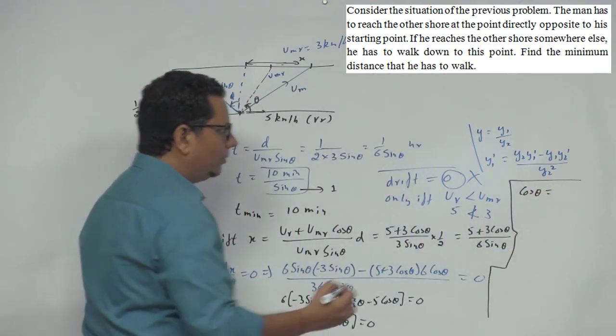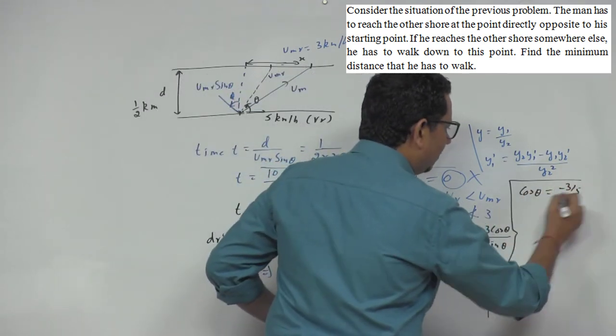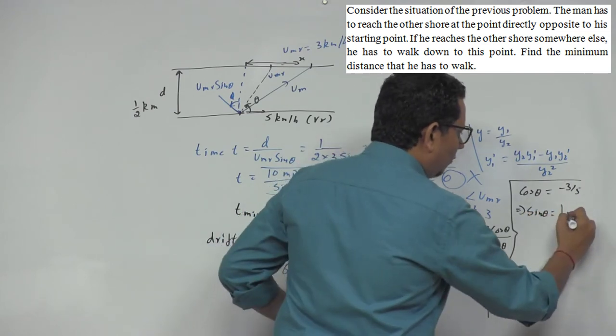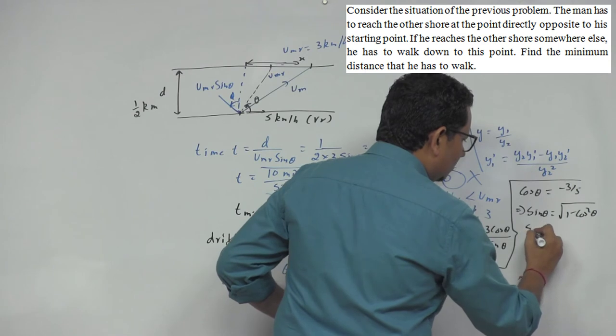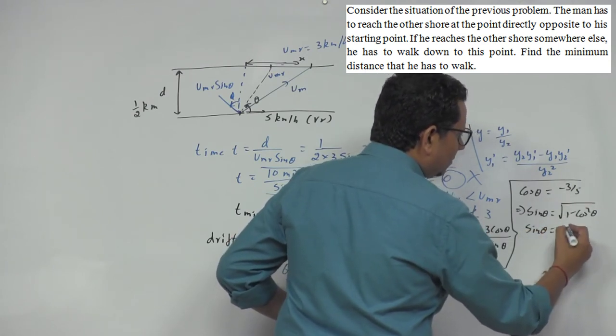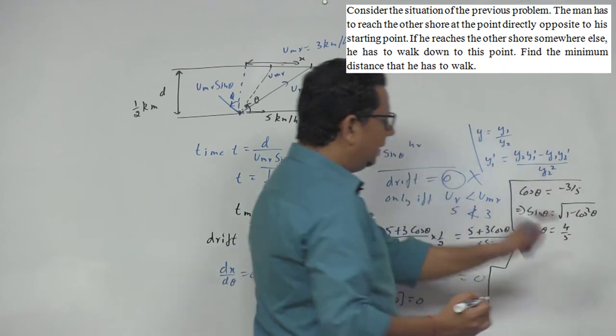Cos theta equals minus 3/5, which implies sin theta, using the square root of 1 minus cos square theta, will equal 4/5.